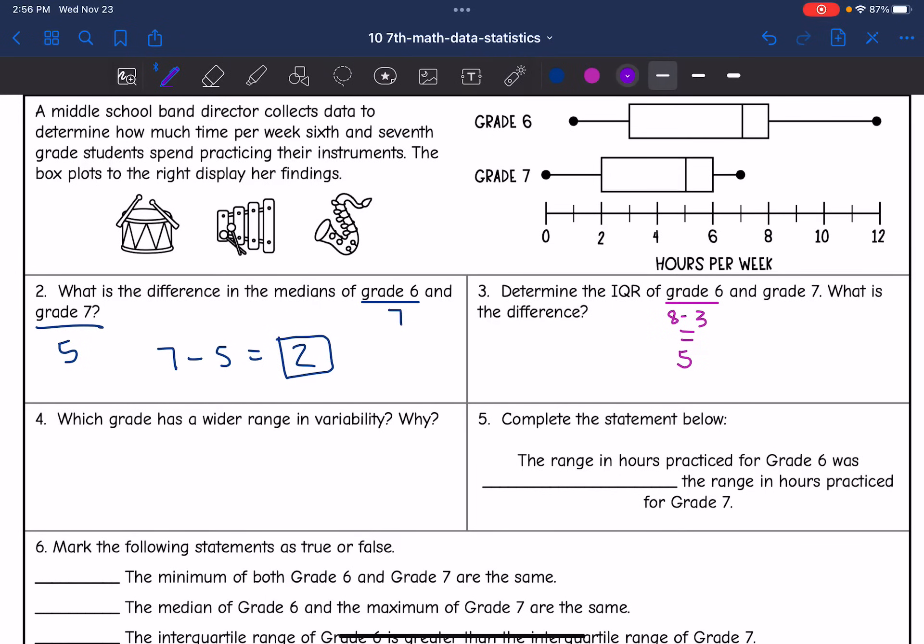And then grade seven, their IQR would be six minus two, which is four. So now I'm going to find the IQR's difference by subtracting them and I get one.